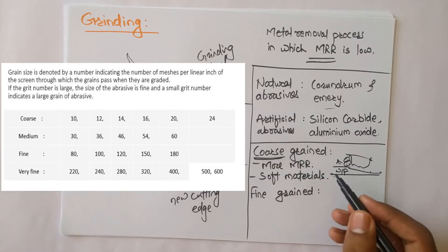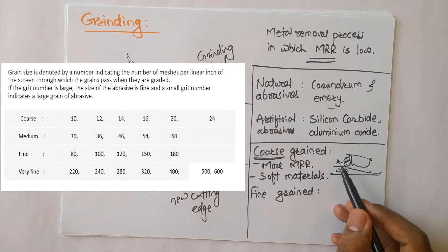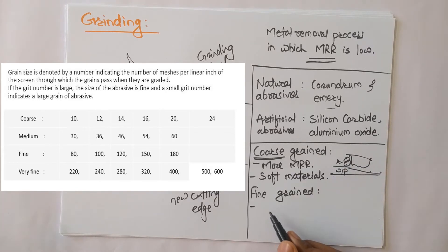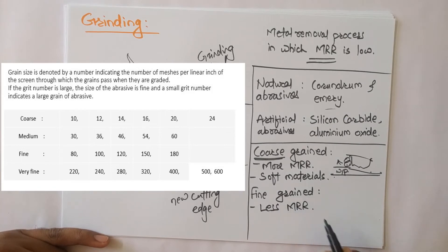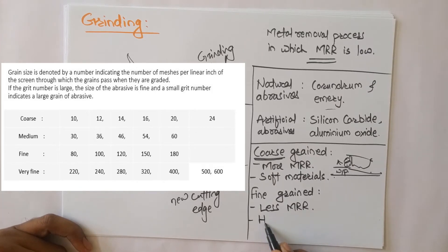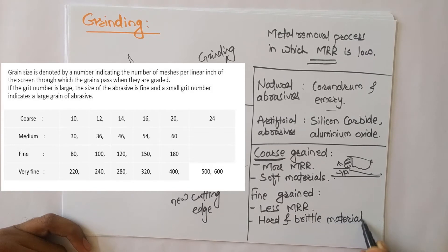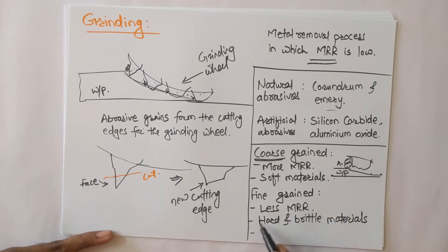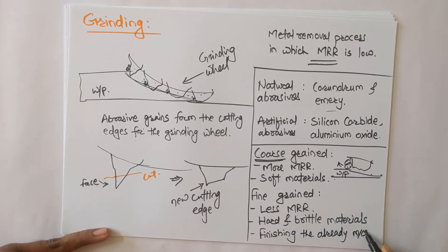Using coarse grained grinding wheels, the time needed to remove a certain amount of material will be less. In fine grained grinding wheels, less MRR is observed. Fine grained abrasive grinding wheels are used to grind hard and brittle materials. Basically, the fine grained grinding wheel is used for finishing already machined parts.